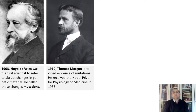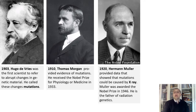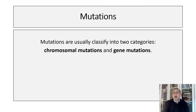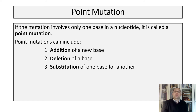Thomas Hunt Morgan provided evidence of mutations with his famous experiments examining inheritance in fruit flies in the early 1900s. During the 1920s, Herman Muller studied mutations in greater depth and provided data showing that mutations could be caused by x-rays. As established, mutations are usually classified into two categories: chromosomal mutations and gene mutations. First we will examine gene mutations. If the mutation involves only one base in a nucleotide, it is called a point mutation.